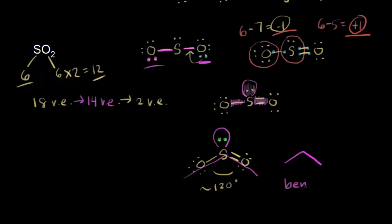Those are two examples of molecules with three electron clouds. Remember, it's not just the number of electron clouds — you have to ignore lone pairs of electrons on the central atom to predict the final shape of the molecule.